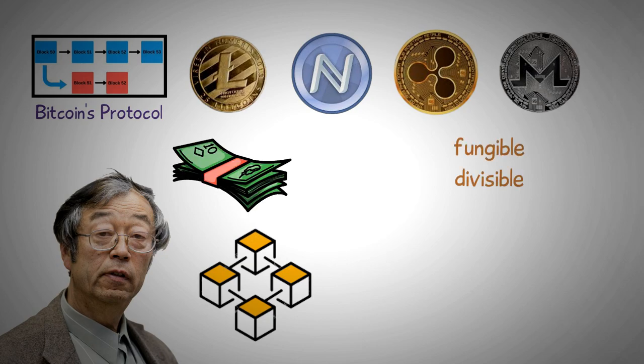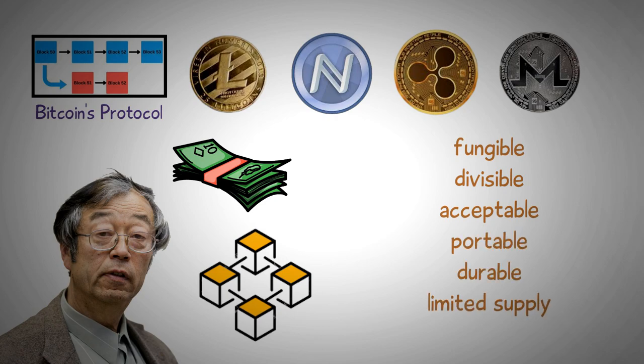Coins have the same characteristics as money. They are fungible, divisible, acceptable, portable, durable, and have limited supply. Most ambitious crypto enthusiasts insist that coins will replace conventional money in the future.